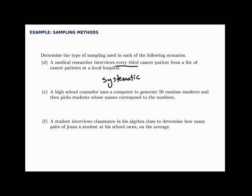A high school counselor uses a computer to generate 50 random numbers and then picks students whose names correspond to the numbers. There's no division into groups and no systematic process — this is the full population of students and we just select random numbers from that full group. That's what makes this simple random sampling: looking at the full population and using a random number generator to select without any division into groups. Lastly, a student interviews classmates in his algebra class to determine the average number of pairs of jeans a student at the school owns. Rather than selecting randomly from a full student list, the student just asks nearby students — those in his class — which makes this a convenient sample.